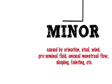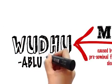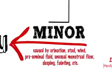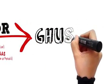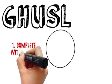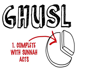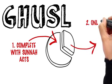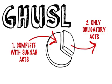To achieve Tahara from the minor impurity, you only need to renew your Wudhu — ablution. Whereas in the case of major impurity, you need to take a Ghusl. And Ghusl can be taken in two ways: a complete Ghusl with all the Sunnahs of the Prophet, and a partial or sufficient Ghusl, which means only doing what is obligatory to free yourself from the ritual impurity.